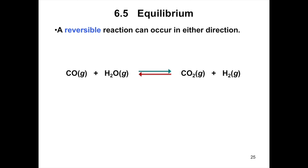Consider the reversible reaction of carbon monoxide and water to form carbon dioxide and hydrogen. Two full-headed arrows are used to show that the reaction can proceed from left to right and right to left as written. The forward reaction proceeds from left to right and the reverse reaction proceeds from right to left.